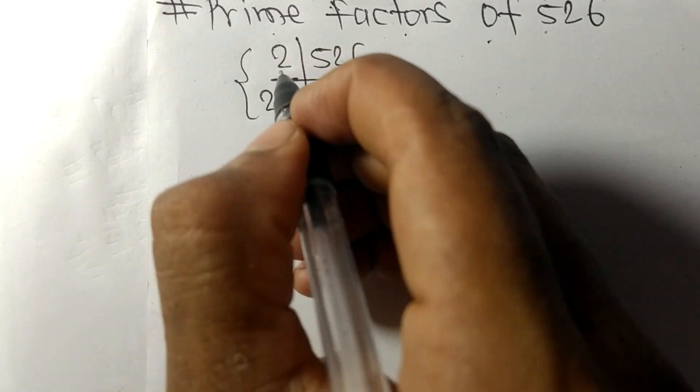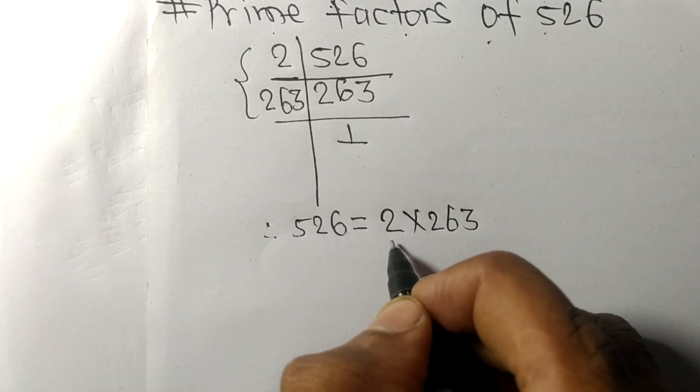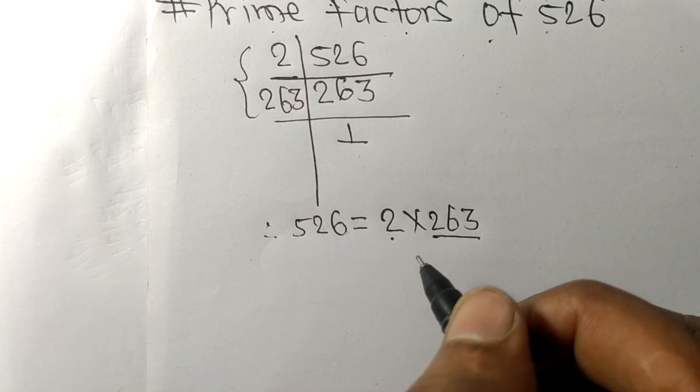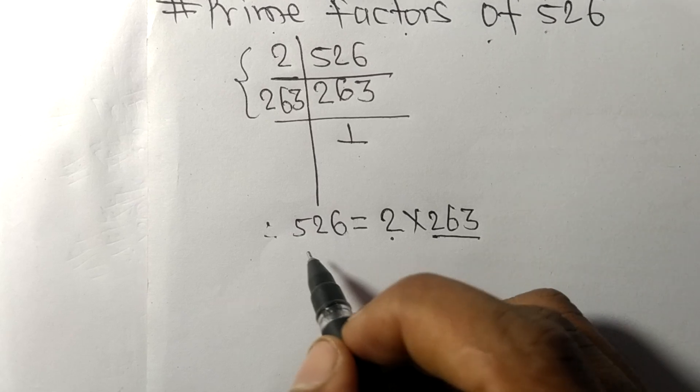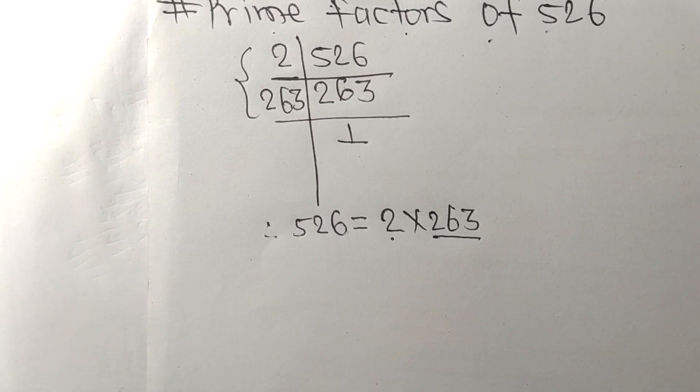2 times 263. So 2 and 263 are the prime factors of 526. Thanks for watching.